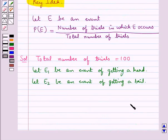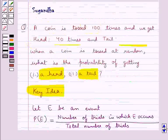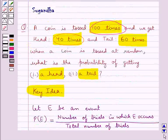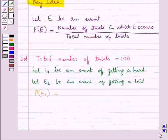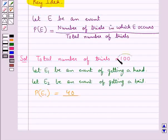Now we need to find the probability of getting a head, that is the probability of event E1. This is equal to the number of trials in which E1 occurs, which is given as 40, since we get head 40 times. So this is equal to 40 upon 100, which simplifies to 2 upon 5.